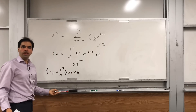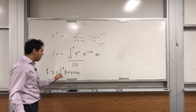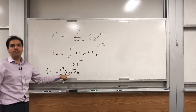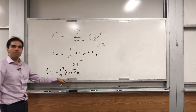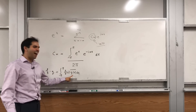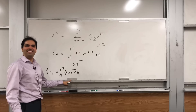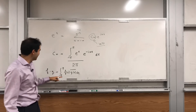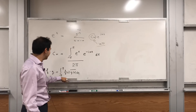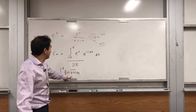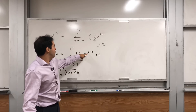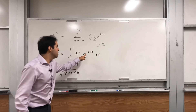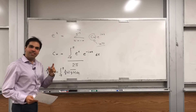That is for real-valued functions. For complex valued functions, you have to put an extra conjugate bar. And in particular, if you put a bar on e to the inx, you get e to the minus inx — that's why you have the minus sign.